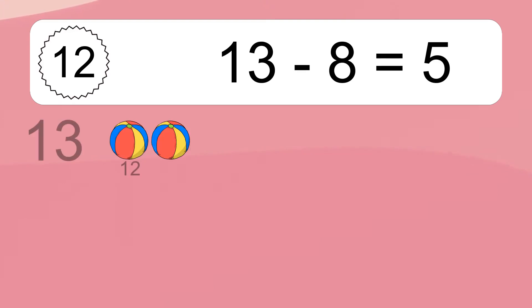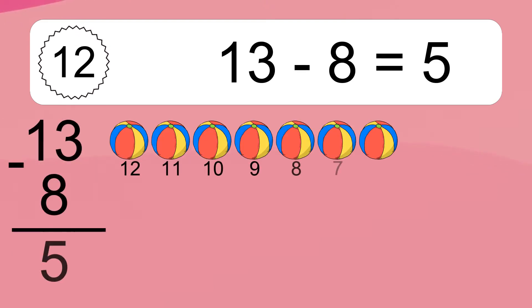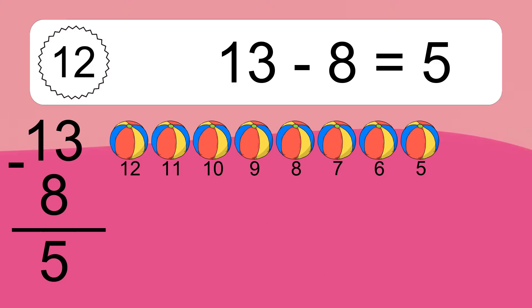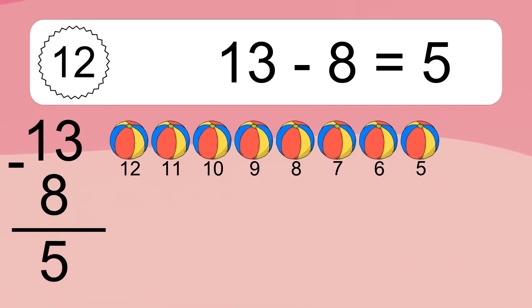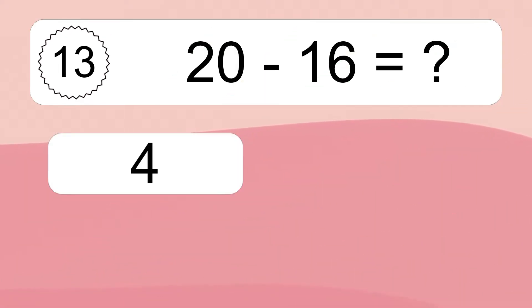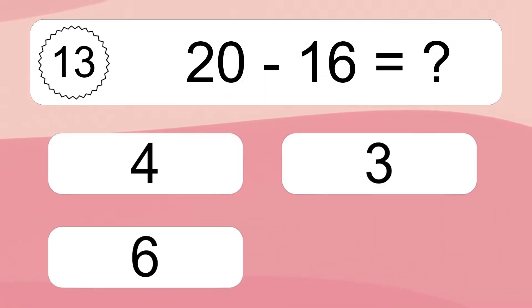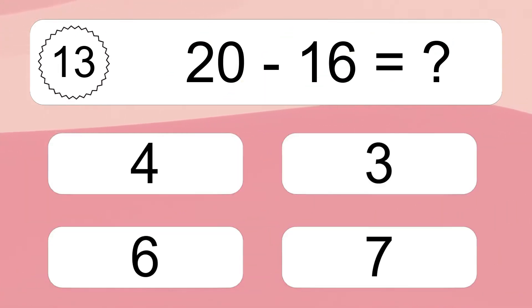13 minus 8 equals what? 13 minus 8 equals 5. Let's count it: 12, 11, 10, 9, 8, 7, 6, 5.